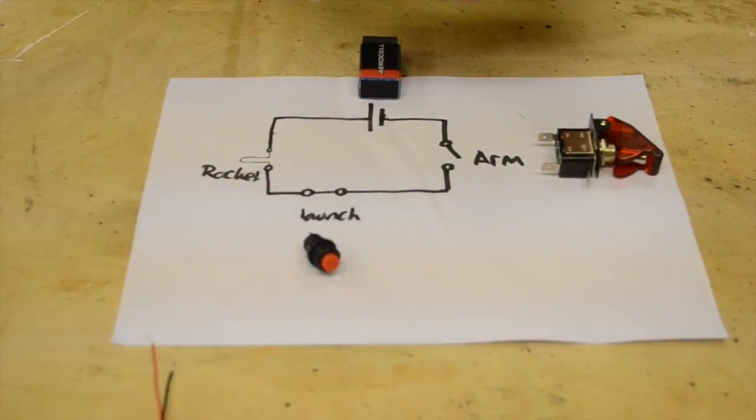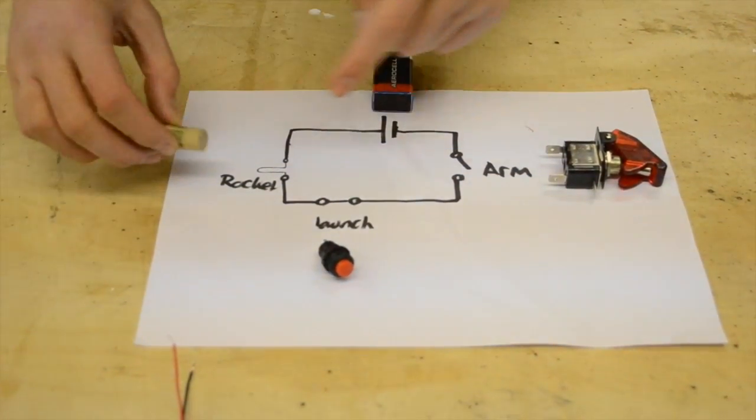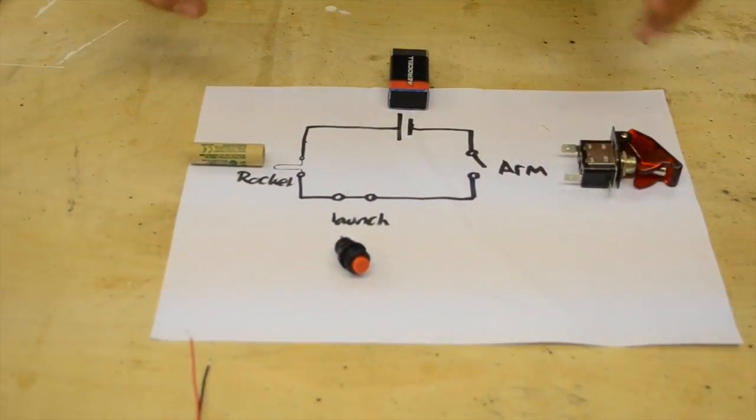That's the idea. Hopefully it will work, and then that goes around to the nichrome wire and the end of the rocket motor, which should then heat it up and launch it.